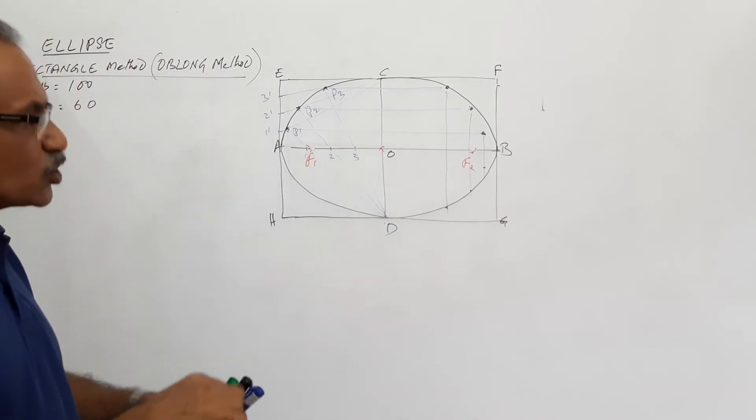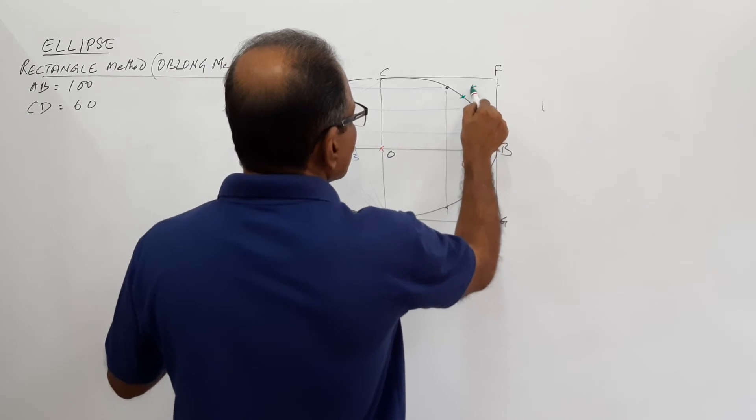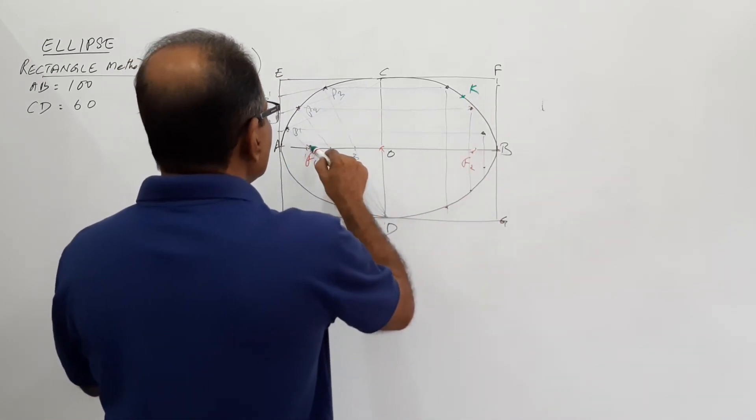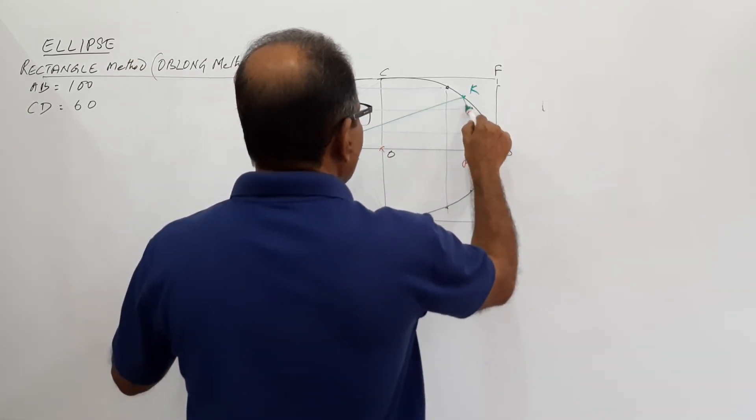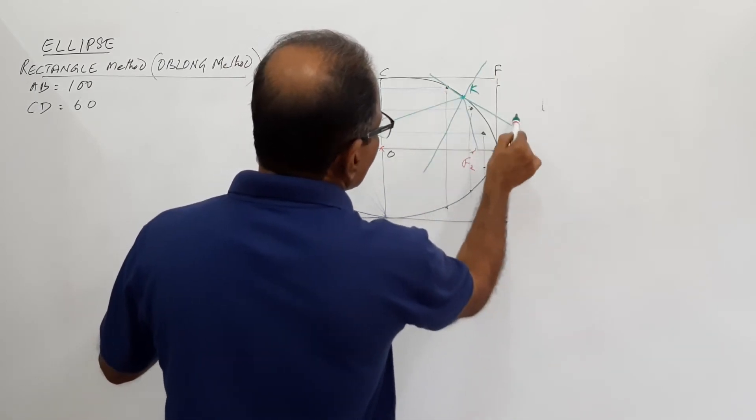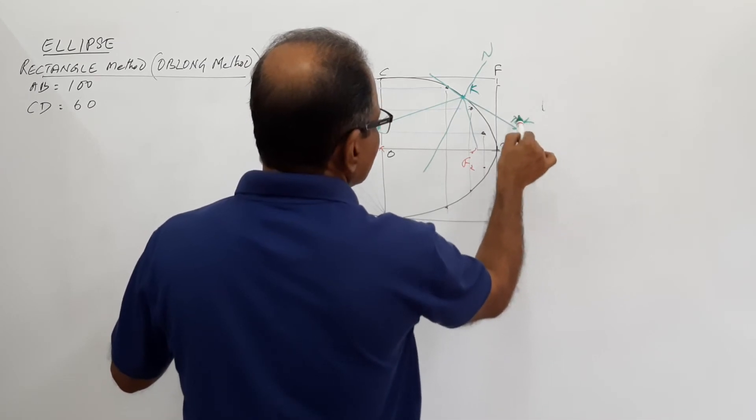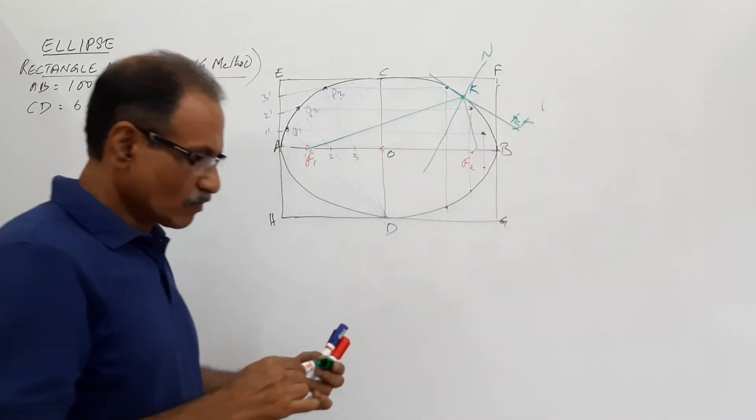Now if you are asked to draw normal and tangent at any point, suppose this is K, you want to draw normal and tangent at K. What do you do? Join KF1, KF2, draw the angular bisector tangent, draw its perpendicular. Angular bisector, normal perpendicular, tangent.